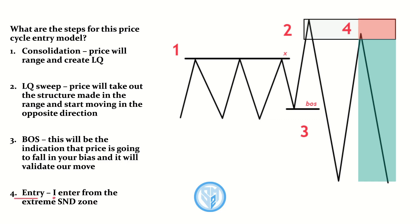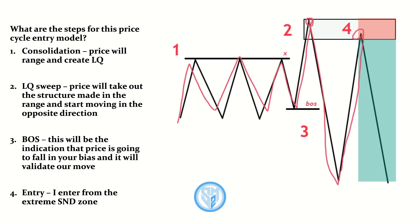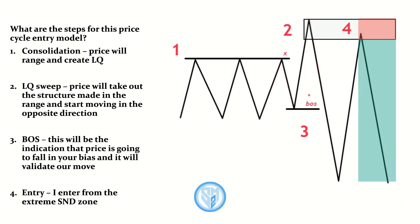Once we see the break of structure, all we have to do is enter from the extreme supply and demand zone — in this example, the supply zone. So the four steps are: consolidation, liquidity sweep, break of structure, then the entry. I like to keep things simple — those four steps are exactly what you need for this price cycle entry model.